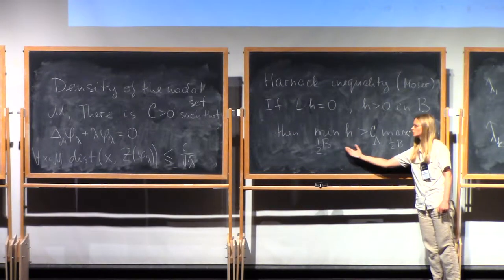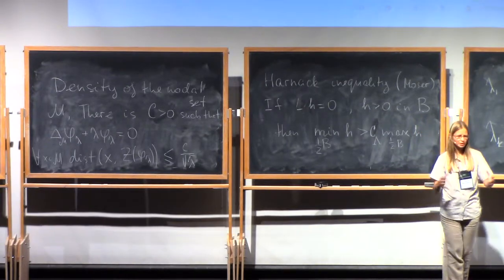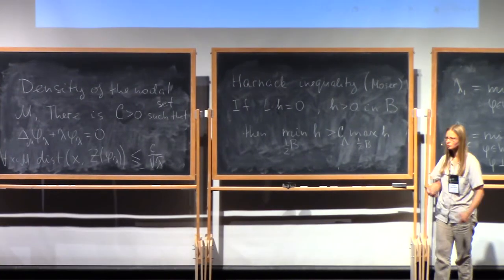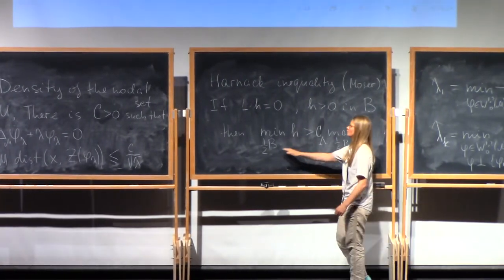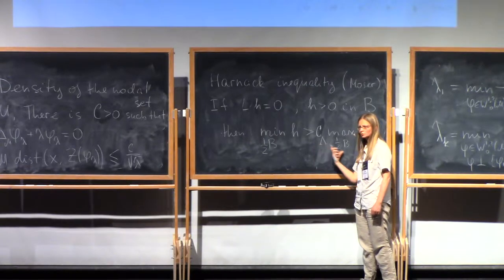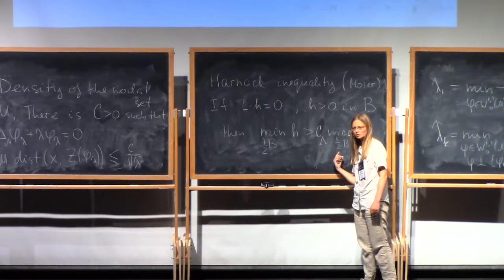It also tells you that you can use Harnack inequality on each scale, small one or large ones. If you control ellipticity constant of your operator, you have this inequality with the same constant for small and large balls.